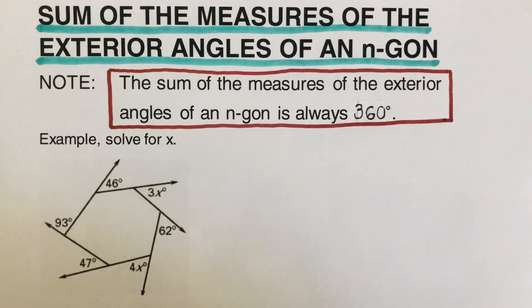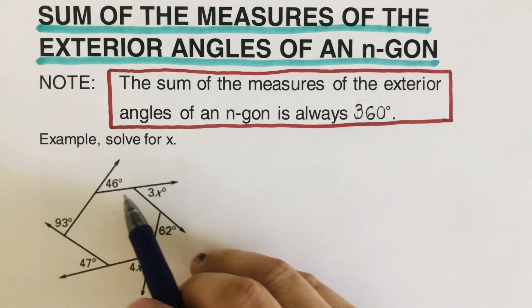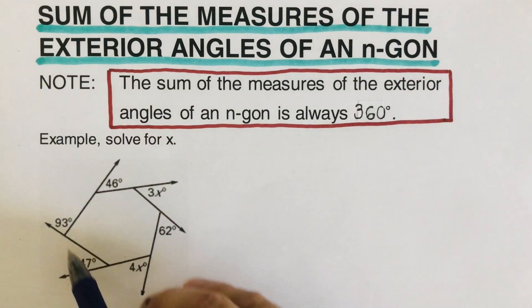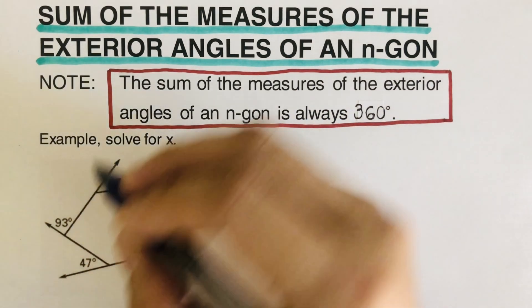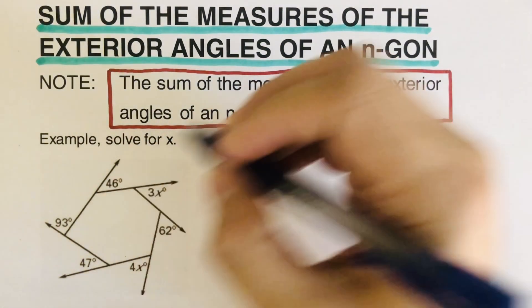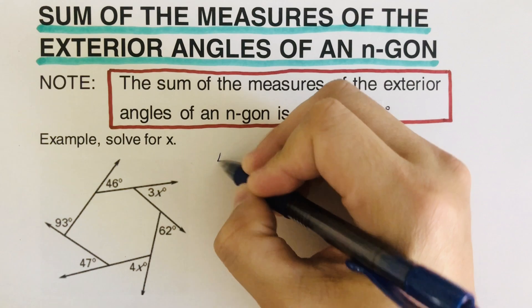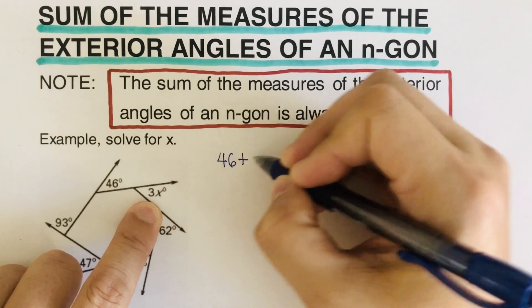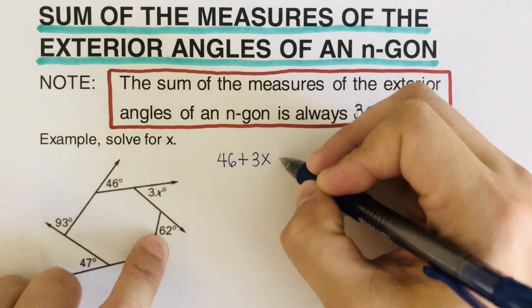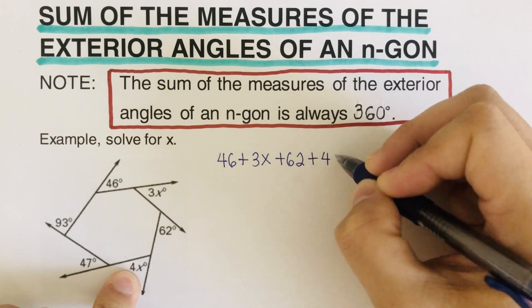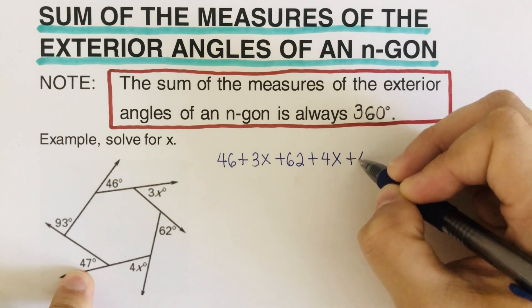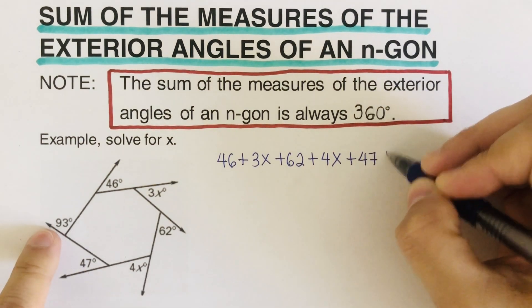Since we have expressions here, 3x and 4x, we need to determine what x is such that if we add all of these together, it will come out 360. So let's set up our equation. We're going to start with 46, then go around: plus 3x plus 62 plus 4x plus 47 plus 93.